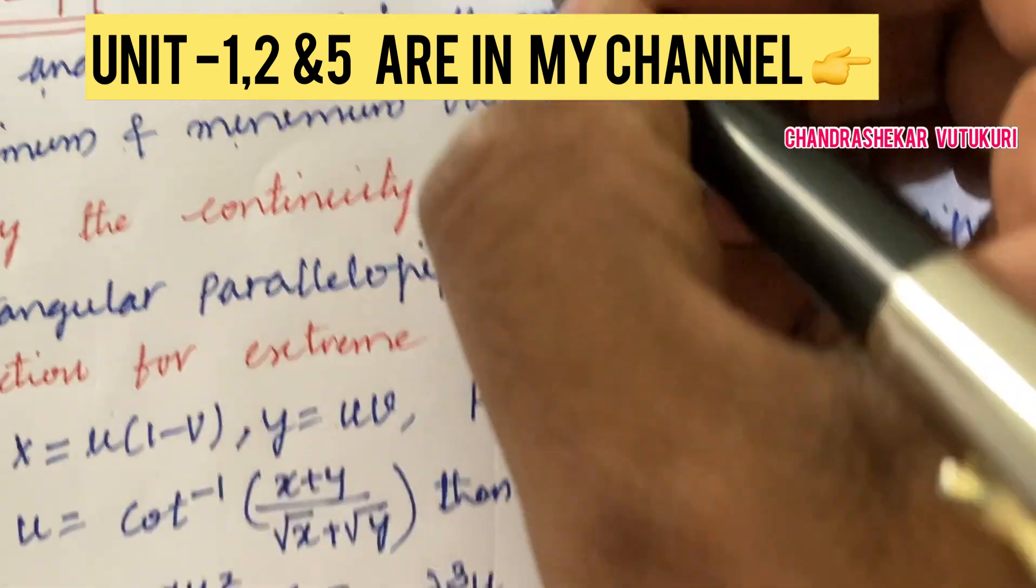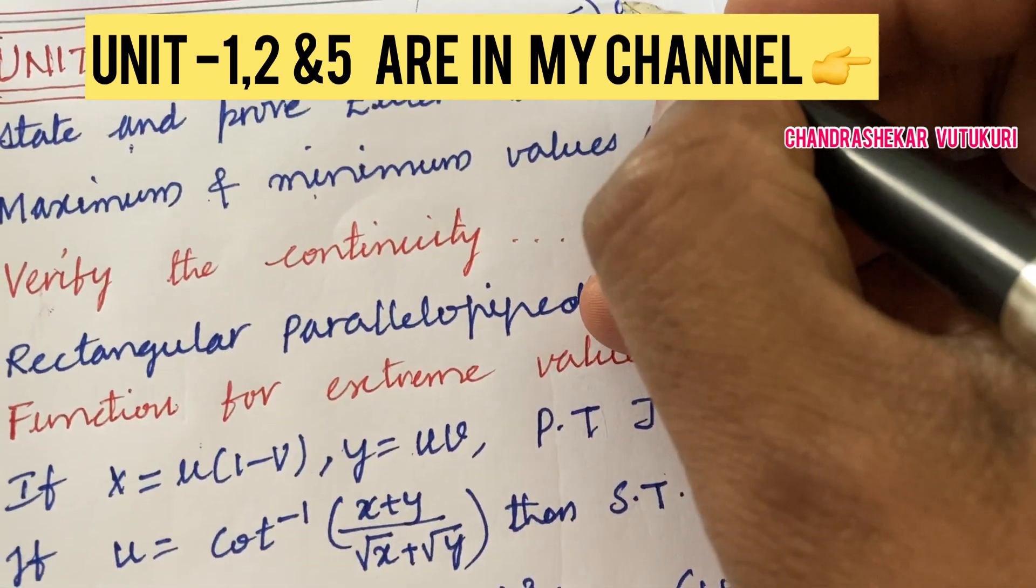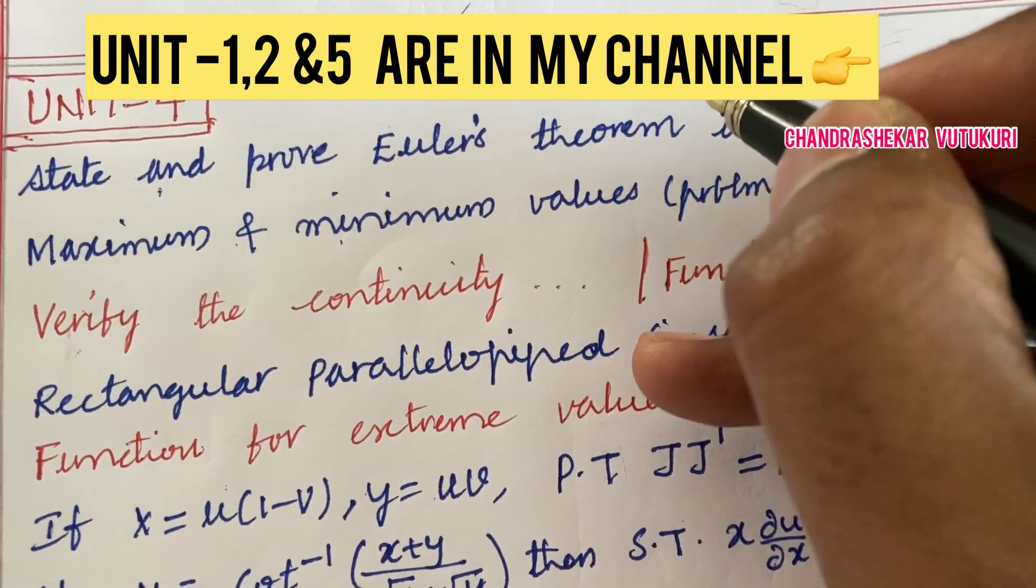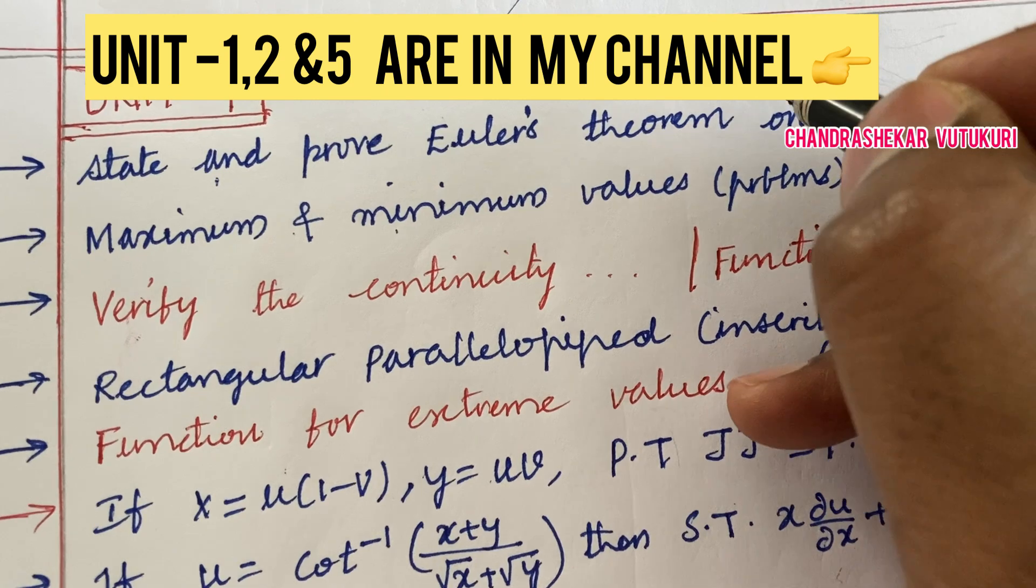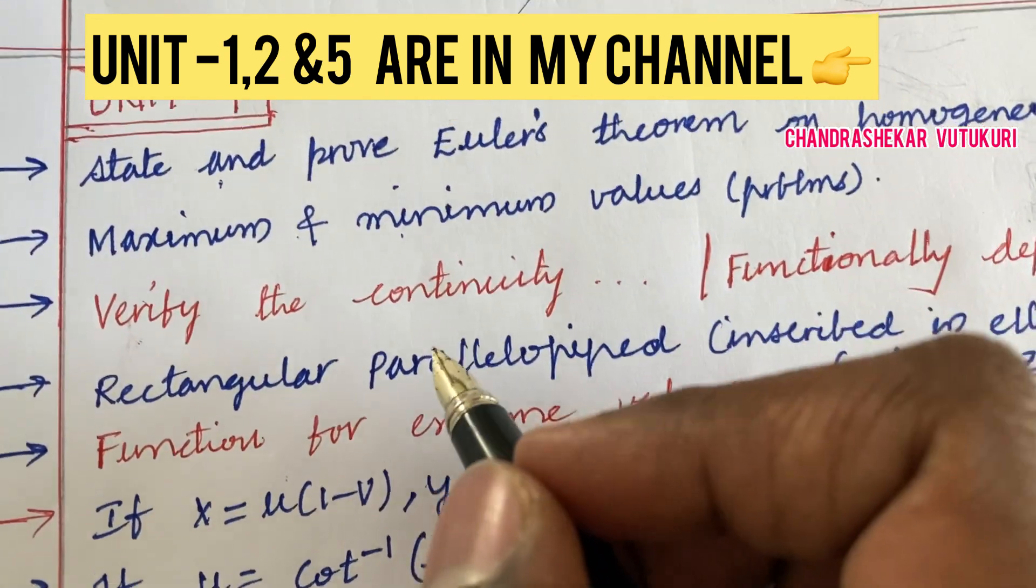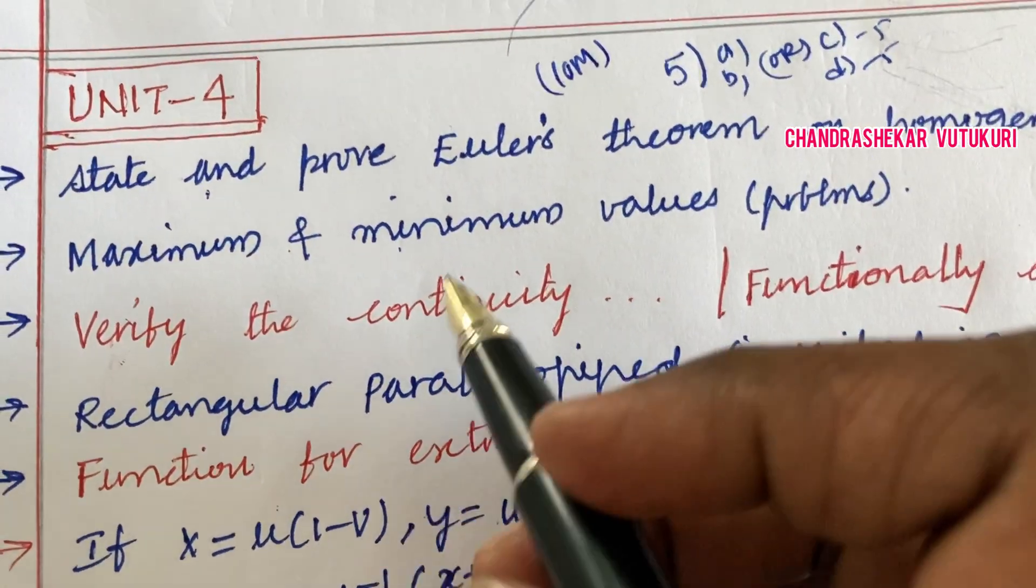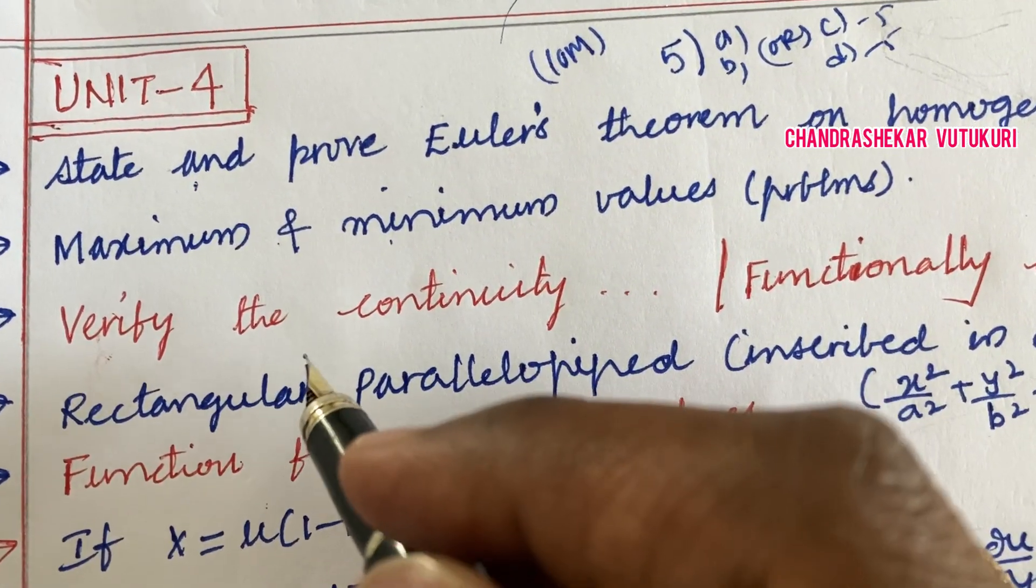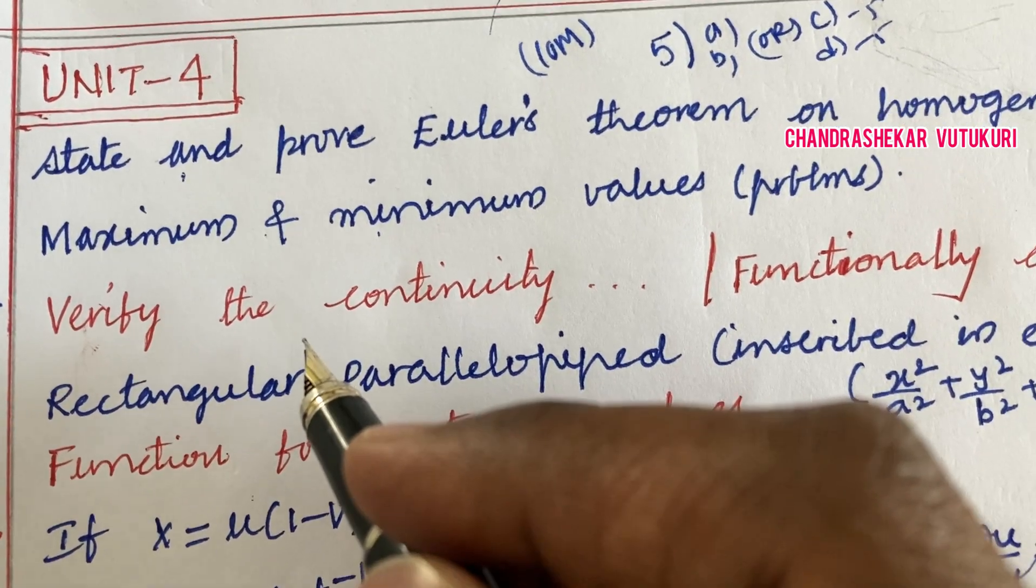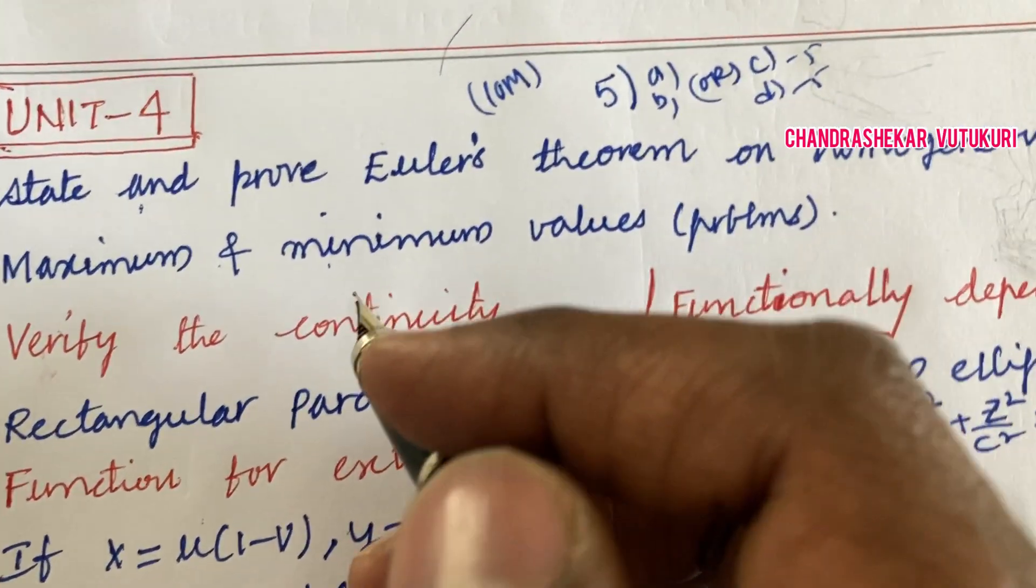The fourth unit, question number 5 in your question paper, has long questions AB or CD. Do not expect a direct 10-mark question all the time—it is a combination of 5-5, or sometimes if the questions are too lengthy, you may get a direct 10-mark question. You need to clear the subject in the first attempt. As per R22 regulation, I have posted the question paper pattern in my channel.